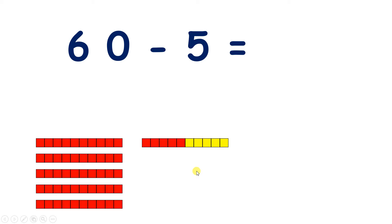So if I'm subtracting 5, I can imagine taking away those yellows, so I'll be left with only the blocks in red. I'll have 5 tens and then 5 units.